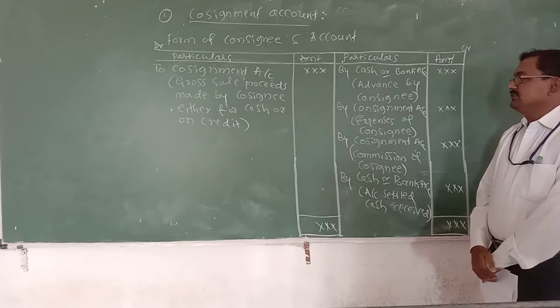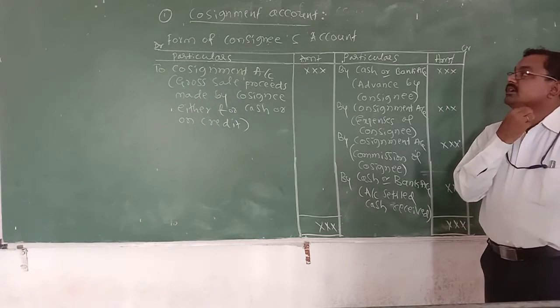On the credit side: advance by consignee. This advance is taken on the credit side of the consignee's account. Then, expenses of the consignee.